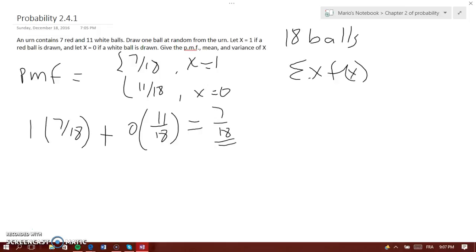Now to find the variance, we need to find the sum of x squared times f of x. Where x squared, 1 squared is still 1, so it would be 1 times 7 out of 18 plus 0, which is still 0, times 11 out of 18. And that would still go to 7 out of 18.